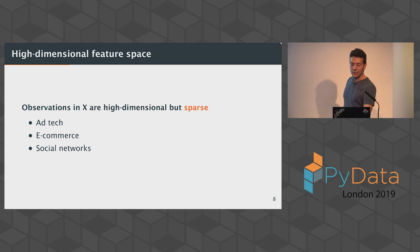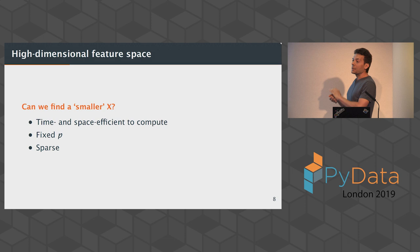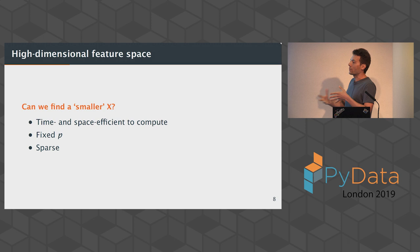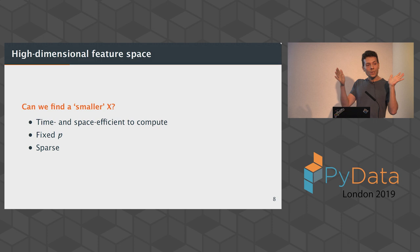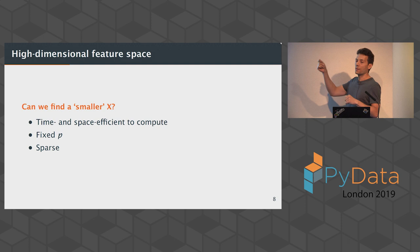So the problem is we should be able to find a smaller X. You could use PCA or SVD or some other linear algebra trick, but they're not very efficient in computation time. I'm always thinking of online learning with a massive data set. I want my number of features to be fixed — so the model size will be however much I specify — and I want to preserve sparsity so I can compress my data, only saving the non-zero entries in my X matrix.